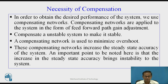What is the necessity of compensation? In order to obtain the desired performance of the system, we have to use compensating networks. Compensating networks are applied to the system in the form of feed forward path gain adjustment. They compensate unstable systems to make them stable and minimize overshoots. These compensating networks increase the steady state accuracy of the system. An important point to be noted here is that the increase in steady state accuracy brings instability to the system.